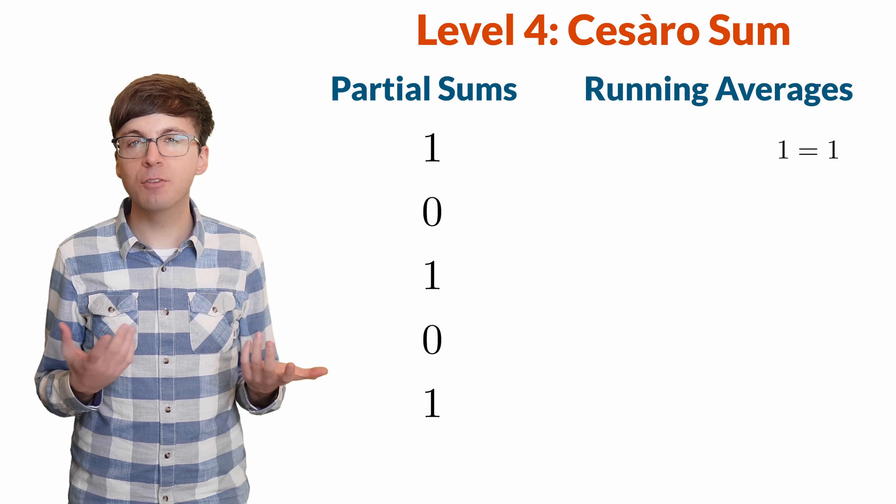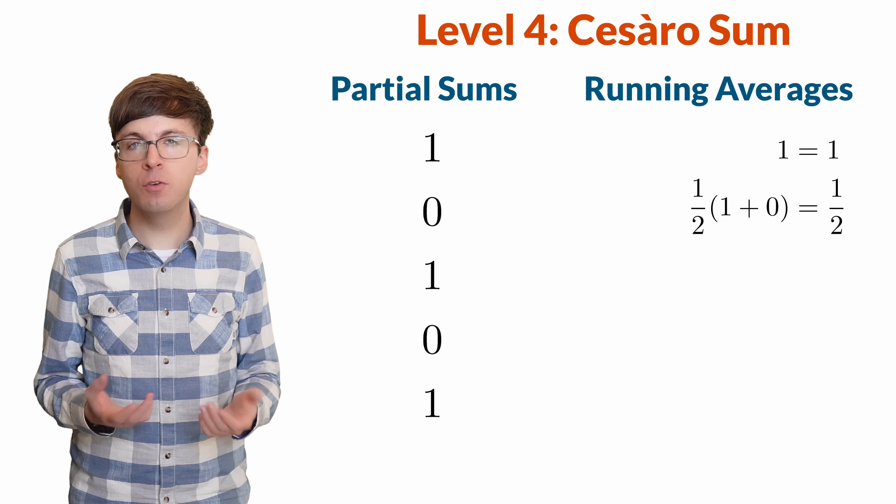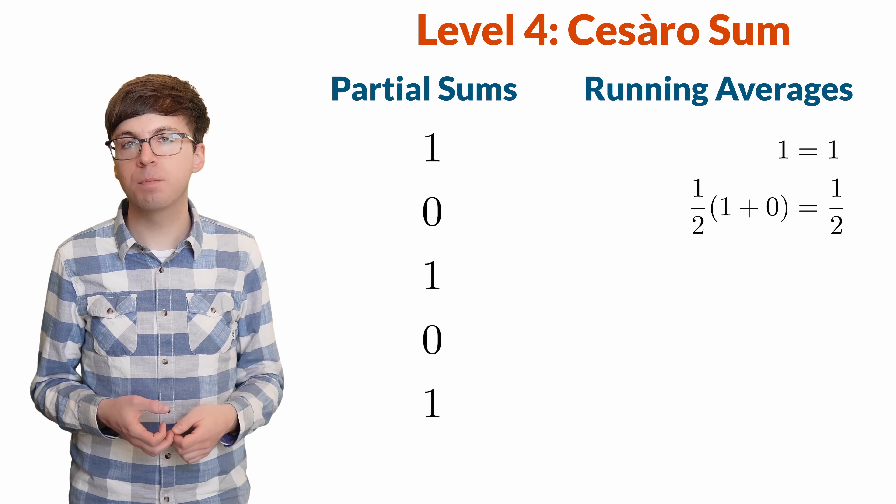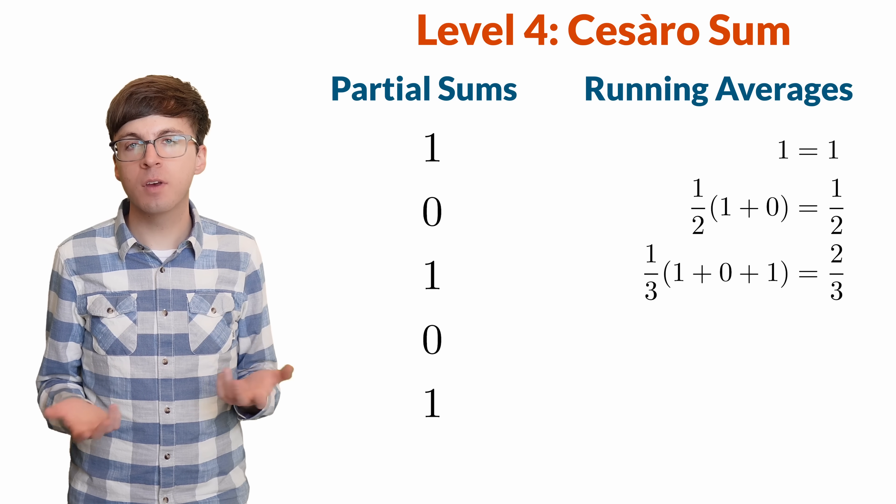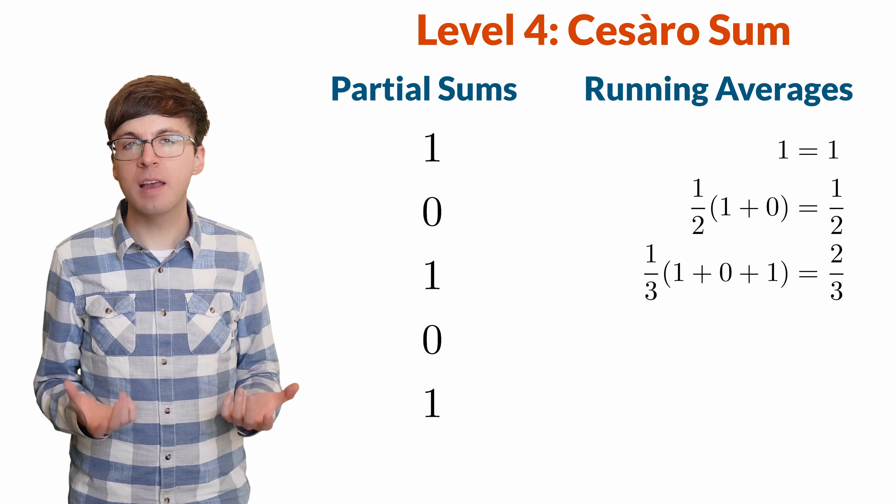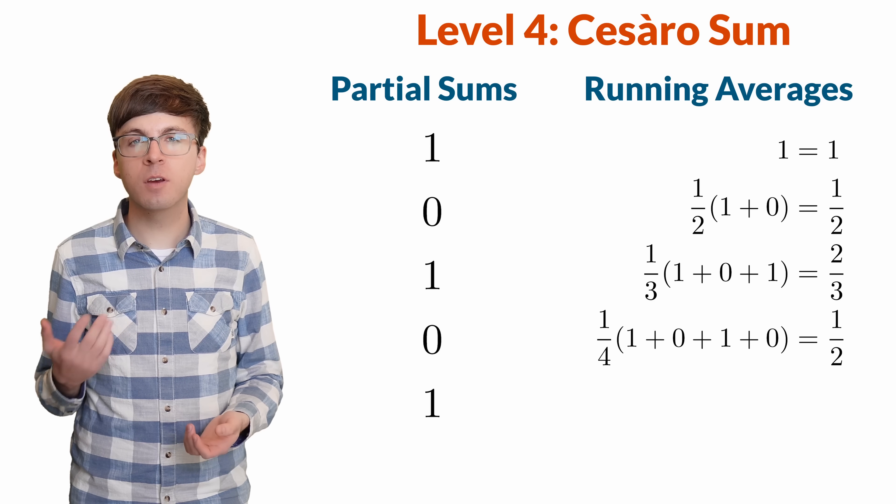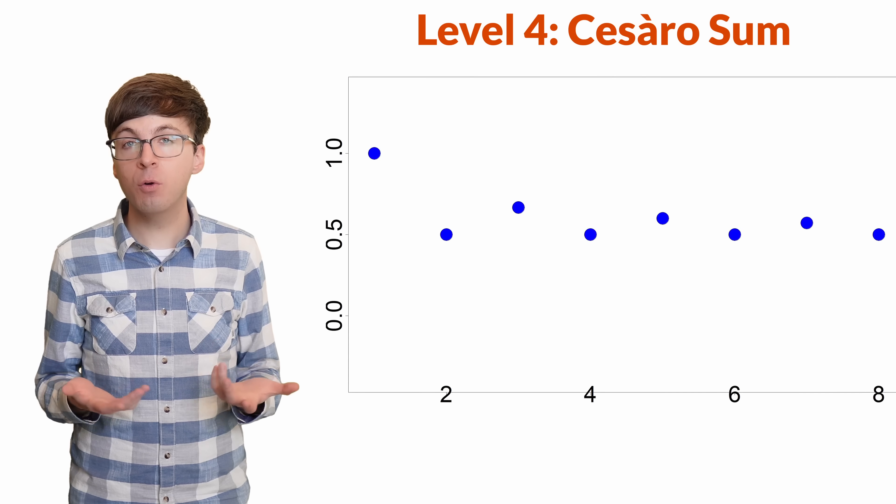First, we take the average of the first partial sum. That's just 1. Next, we take the average of the first two partial sums. The average of 1 and 0 is 1 half. Next is the average of 1, 0, and 1. We add those up and divide by 3, getting that the average is 2 thirds. Next, we take the average of the first four partial sums, and so on. What's happening to these averages? They're approaching 1 half.